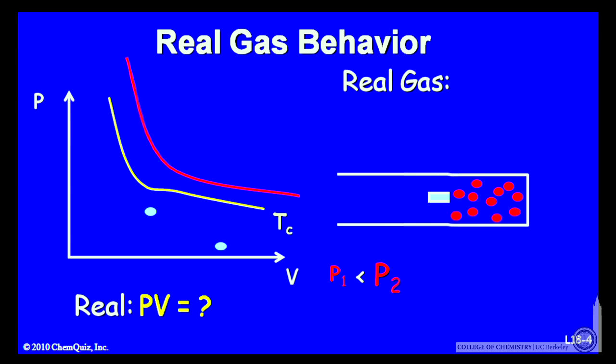As we continue to decrease the volume, we'll get to a point where we'll decrease the volume, but the pressure will not increase. The pressure-volume curve flatlines. So what's going on here?